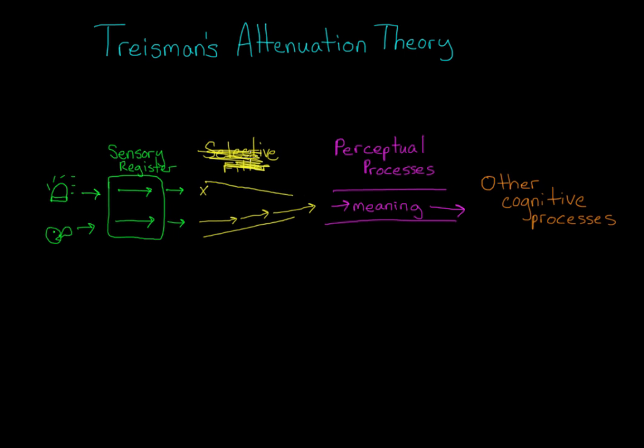So we come to Treisman's attenuation theory of selective attention. Treisman said that instead of a complete filter, we have something called an attenuator. Attenuate just means to weaken, so the attenuator weakens but doesn't eliminate the input from the unattended ear. Then some of it gets through to the perceptual processes, so we still assign meaning to stuff in the unattended ear. It's just not as high priority.